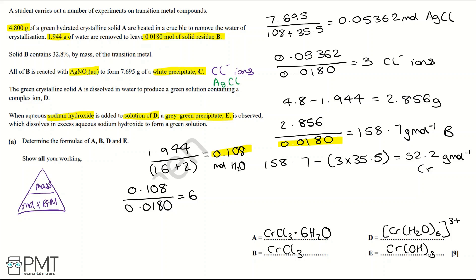To get the nine marks for this question: one mark for working out the moles of silver chloride, a mark for the number of chloride ions present, a mark for the relative formula mass of B, a mark for identifying the transition metal or its relative formula mass, a mark for the moles of water, and a mark for each correct formula.